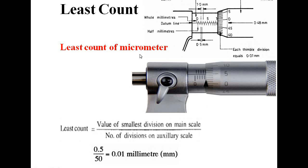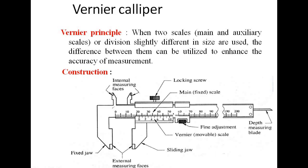The next precision instrument is the micrometer. This is the datum line, this is the hub scale, and this is the millimeter scale. The circular scale has 0 to 50 divisions. The least count of the micrometer is the value of the smallest division on the main scale, which is 0.5 mm, divided by the total number of divisions on the auxiliary scale, which is 50. So 0.5 divided by 50 equals 0.01 mm. The least count of the micrometer is 0.01 mm.